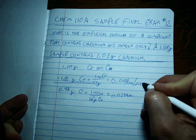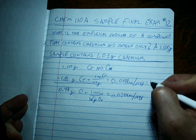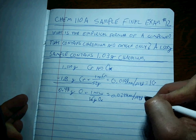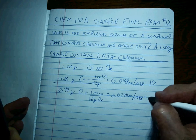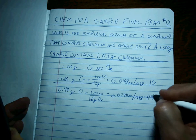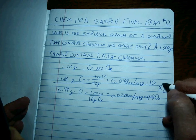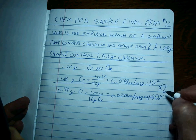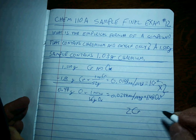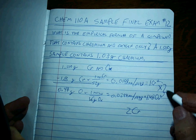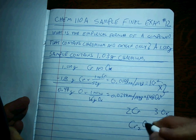Now we have to divide by the smallest one — the normalizing step. We get 1 chromium to 1.48 oxygens, which is close enough to a 1 to 2 ratio, so we multiply both by 2. That gives us 2 chromiums, and 1.48 times 2 is 3 oxygens. We write the formula as Cr₂O₃.